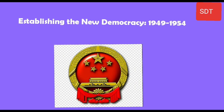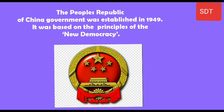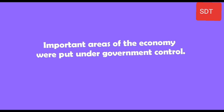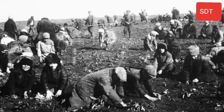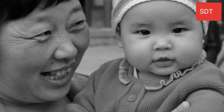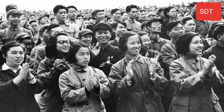Eventually, the CCP was successful in establishing its rule over mainland China while the Guomindang was forced to set up its government on the island of Taiwan. The People's Republic of China was established in 1949, based on the principles of New Democracy — an association of all social classes opposed to landlordism and imperialism. Important areas of the economy were put under government control. The CCP also enacted laws to protect women's rights and abolish polygamy.